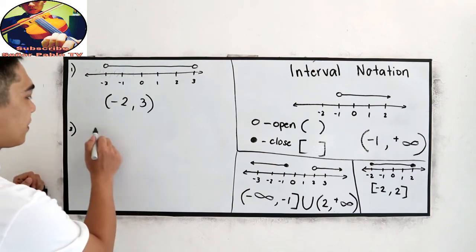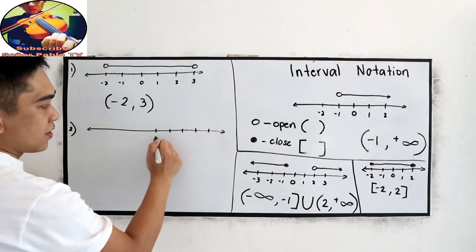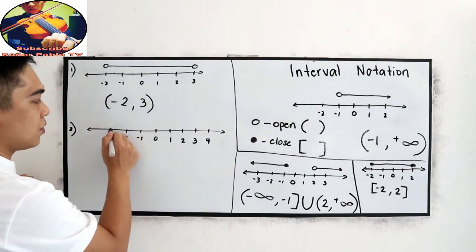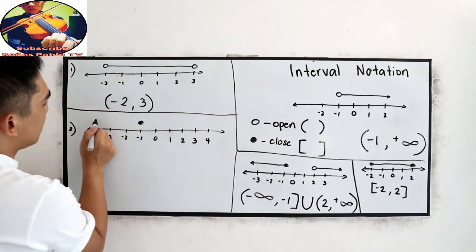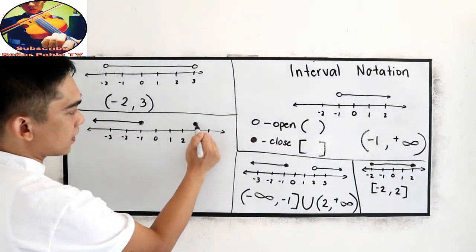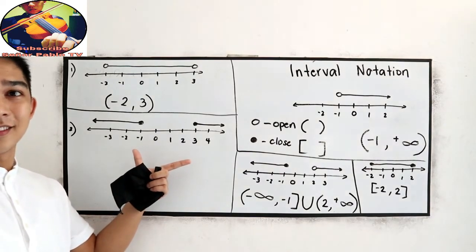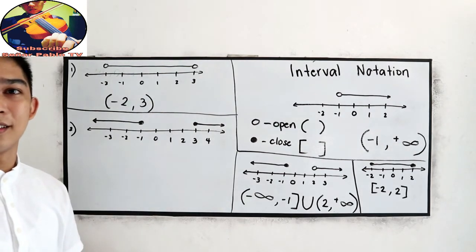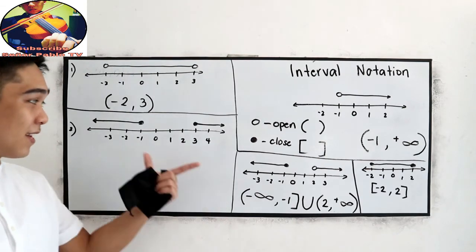How about this one? For number 2, we have a number line with values 0, 1, 2, 3, 4, negative 1, negative 2, negative 3. Get your notebook and try answering. You can pause the video, then resume when you're done, and let us check your work.